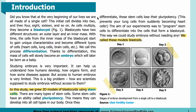Introduction: Did you know that at the very beginning of our lives we are all made of a single cell? This initial cell divides into 2, and then 4, 8, 16, and so on. As cells multiply they become a blastocyst. Blastocysts have two different structures: an outer layer and an inner mass. With time, the cells from the inner mass start to gain unique characteristics and become different types of cells — heart cells, lung cells, brain cells, etc. We call this process differentiation. Thanks to differentiation, this mass of cells will slowly become an embryo, which will later be born as a baby.